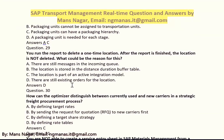You run a report to delete a one-time location. After the report finishes, you get an output but the location is not deleted. What could be the reason for this? The answer is D — there are still existing orders for the location.